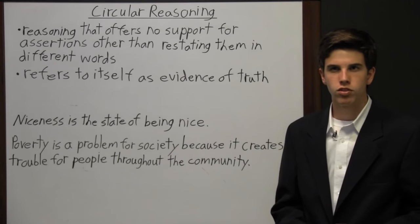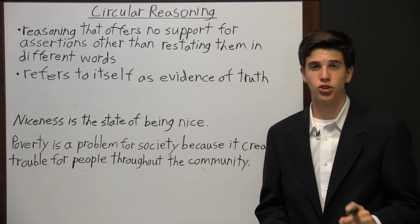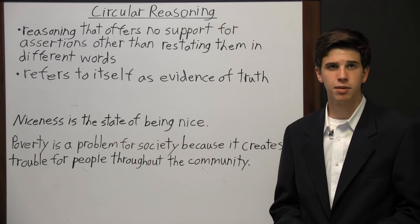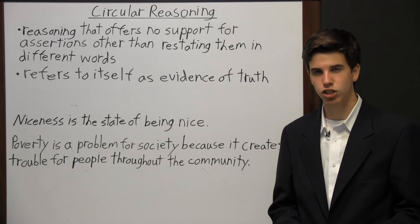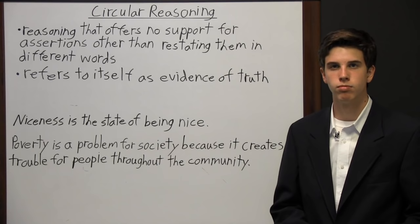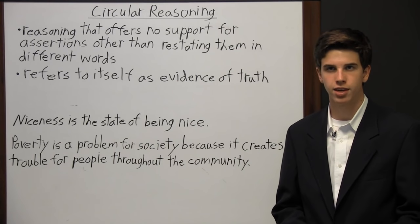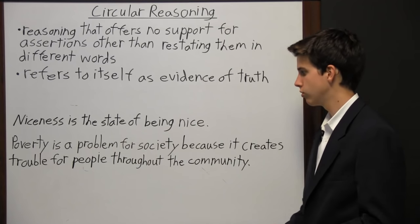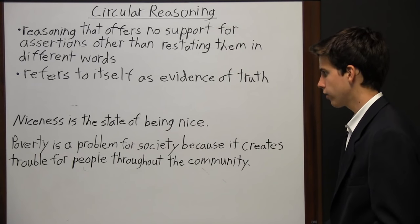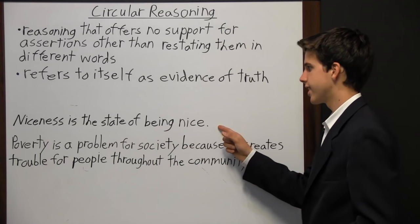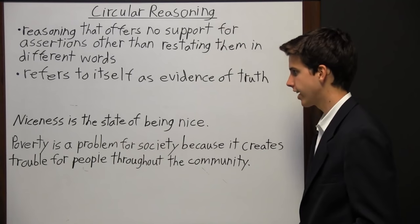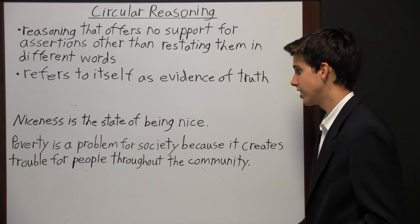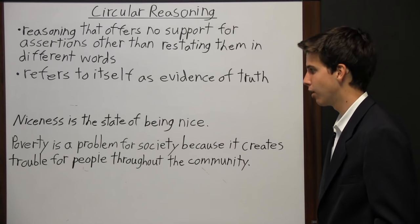Circular reasoning is one of the more difficult logical fallacies to identify because it is typically hidden behind dense language and complicated sentences. A simple example of a circular argument is when a person uses a word to define itself — like 'niceness is the state of being nice.' If you don't know what the word 'nice' means, this sentence won't be much help to you.